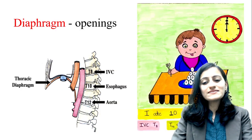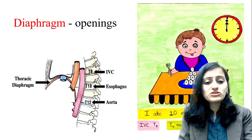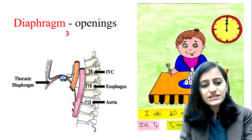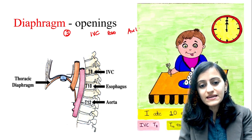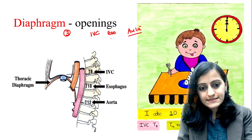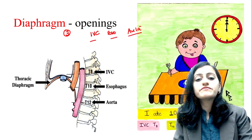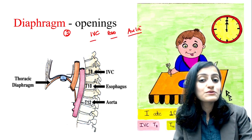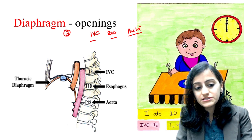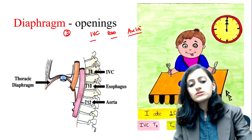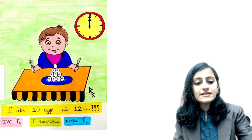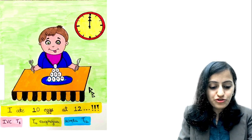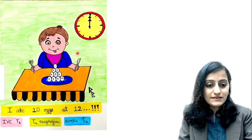So let's discuss the mnemonic. The three major diaphragmatic openings are for IVC, esophagus, and the aorta. A very frequently asked question is: at which vertebral level are these located? The mnemonic for that is depicted in this drawing.